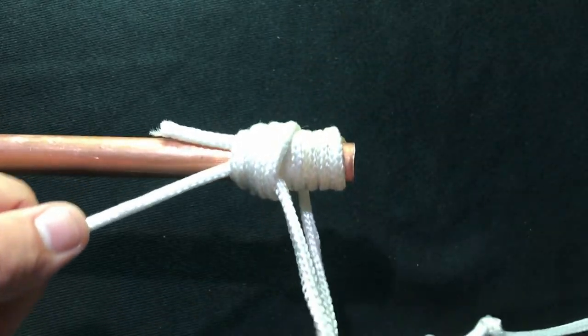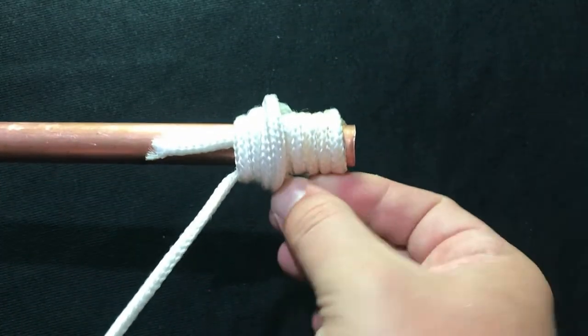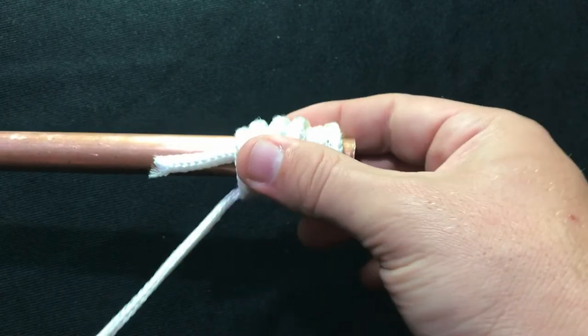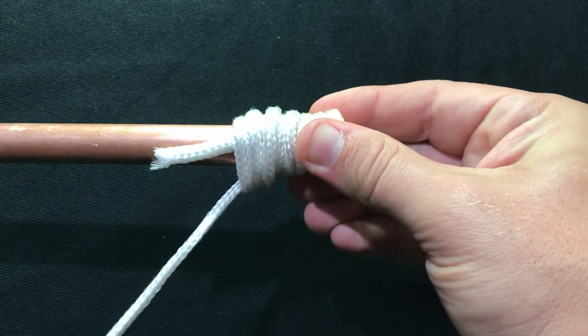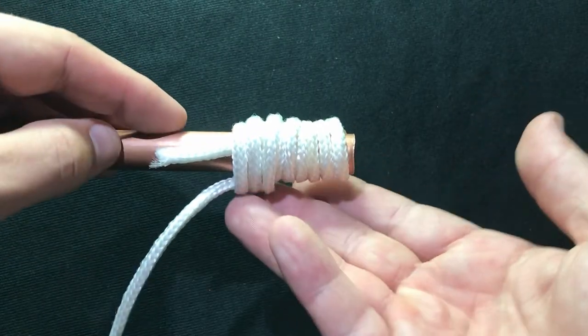Once I've done that, I'm going to pinch with my right hand, pull with my left, and complete the knot. At this point, if this was a real fly, I would clip my line, apply head cement, and the fly would be complete.